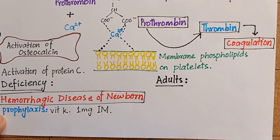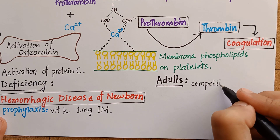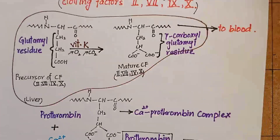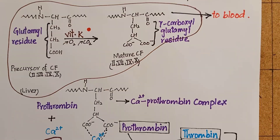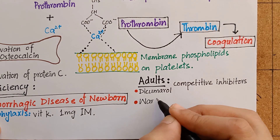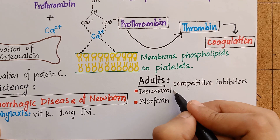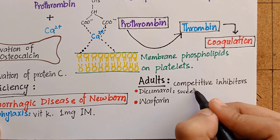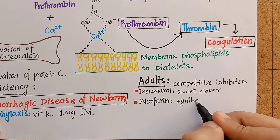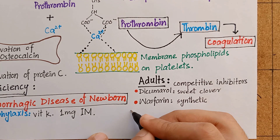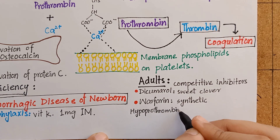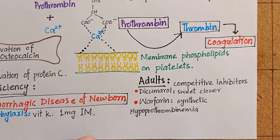There are certain drugs that competitively inhibit the action of vitamin K in gamma carboxylation of glutamic acid, such as dicumarol and warfarin. Dicumarol is a natural anticoagulant found in sweet clover, while warfarin is a synthetic analog. These drugs lead to hypoprothrombinemia, resulting in increased bleeding tendencies from minor injuries.